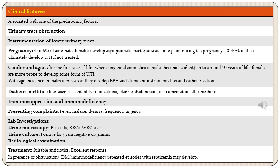Frequent instrumentations and catheterizations in elderly males with BPH introduce organisms into the upper urinary tract, and along with urinary tract obstruction, contribute towards development of pyelonephritis. Diabetes mellitus also predisposes as these patients have increased susceptibility to infections and some will have bladder dysfunction leading to stasis and increased residual volume of urine, requiring frequent instrumentation — all contributing to higher chances of developing pyelonephritis. Immunosuppression and immunodeficiency are additional predisposing conditions.